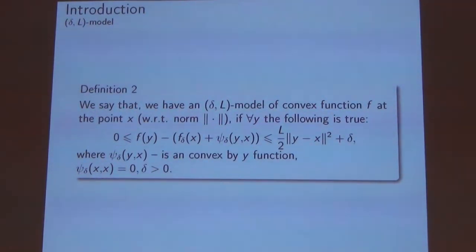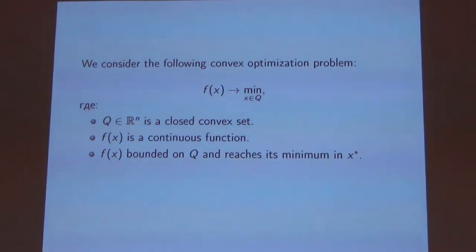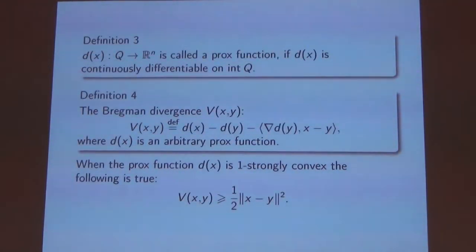The idea of it is to have some more complex local approximation of functions. In this project we will consider the following optimization problem, the minimization problem on a closed convex set. Here are some basic definitions that we will need further: prox function and the Bregman divergence. It's important to mention that we do not require the one strong convexity in the definition of the prox function.